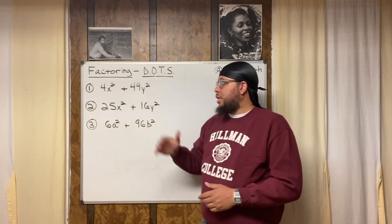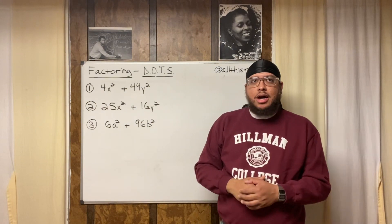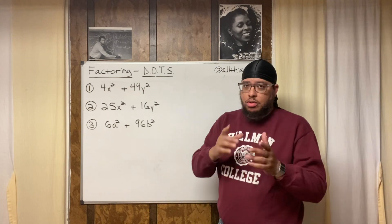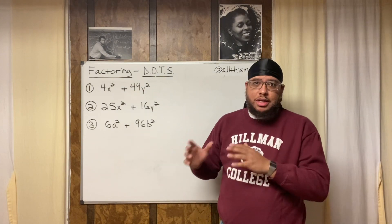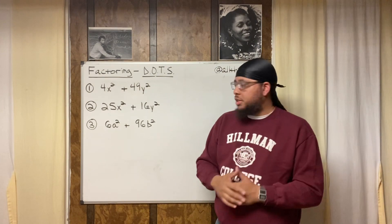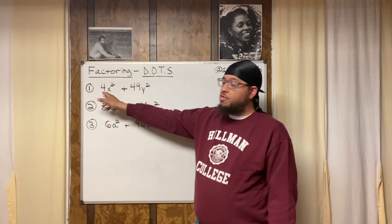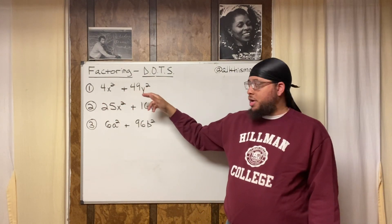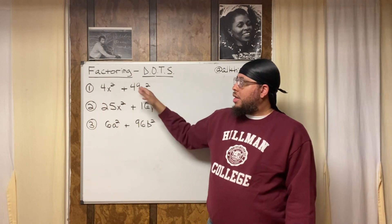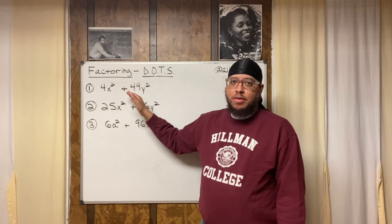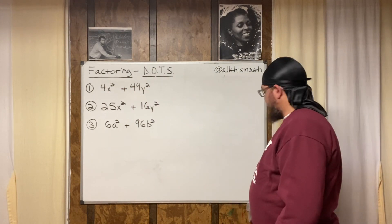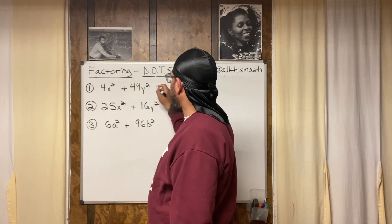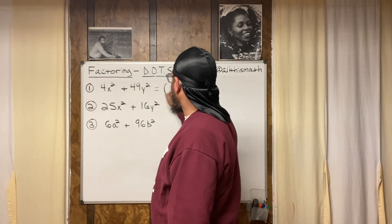I purposely put this example up here because it's like a trick question — a lot of students fall for this. A lot of people will say, oh well, 4x-squared is a perfect square, 49y-squared is a perfect square, and this is two terms.